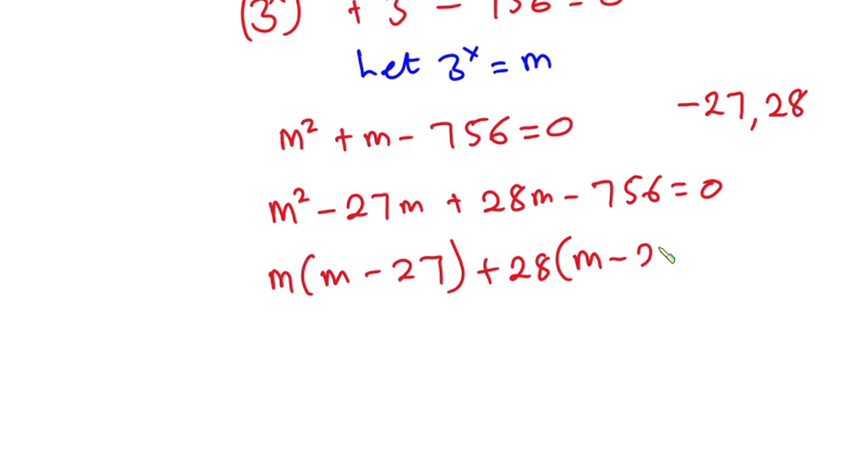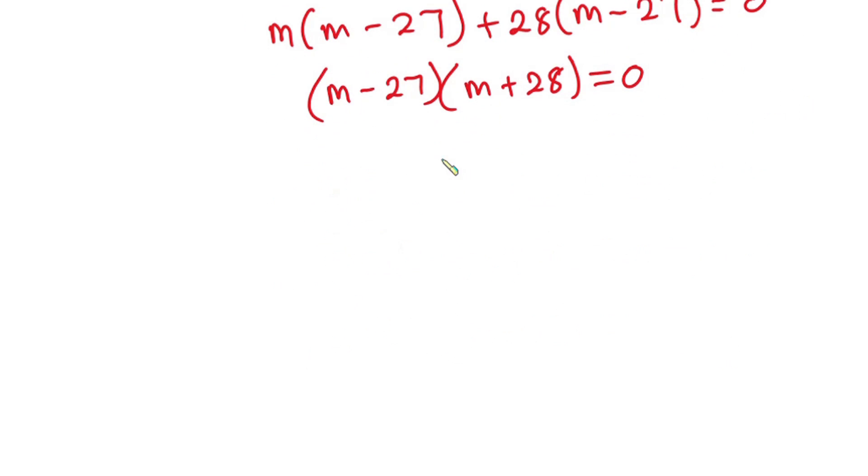And this is equal to zero. So we have m minus 27 as one of the factors, then we have m plus 28 as the other factor, and this is equal to zero.